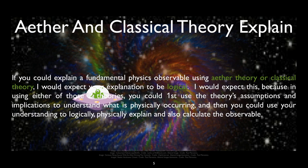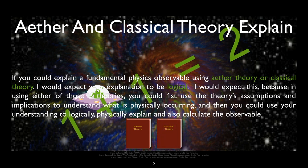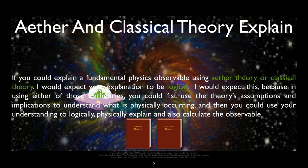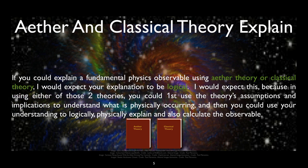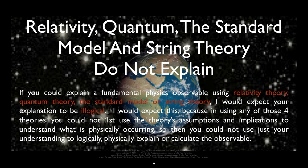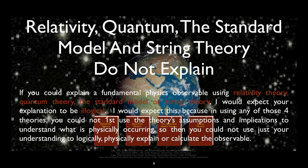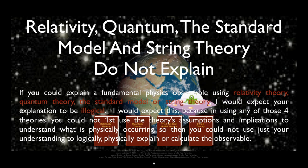If you could explain a fundamental physics observable using ether theory or classical theory, I would expect your explanation to be logical. I would expect this because in using either of those two theories, you could first use the theory's assumptions and implications to understand what is physically occurring, and then you could use your understanding to logically physically explain and also calculate the observable. If you could explain a fundamental physics observable using relativity theory, quantum theory, the standard model, or string theory, I would expect your explanation to be illogical, because in using any of those four theories, you could not first use the theory's assumptions and implications to understand what is physically occurring, so you could not use your understanding to logically physically explain or calculate the observable.